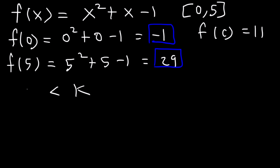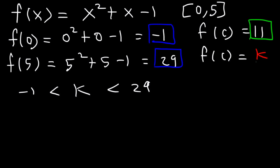k has to be between negative one and 29. Now keep in mind, f of c is equal to k. So therefore k is 11. So 11 is between negative one and 29. So the Intermediate Value Theorem does apply to this function within this interval.